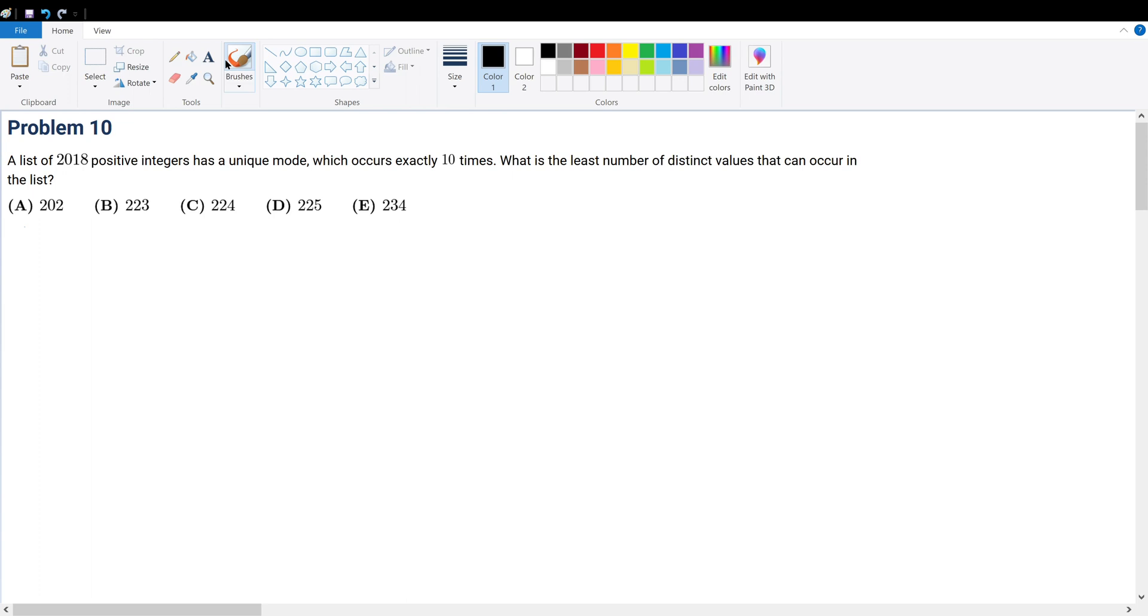So, what is the mode? The mode is the term that occurs the most frequently. Let's say I have a set: 2, 2, 3, 3, 3. What is my mode?